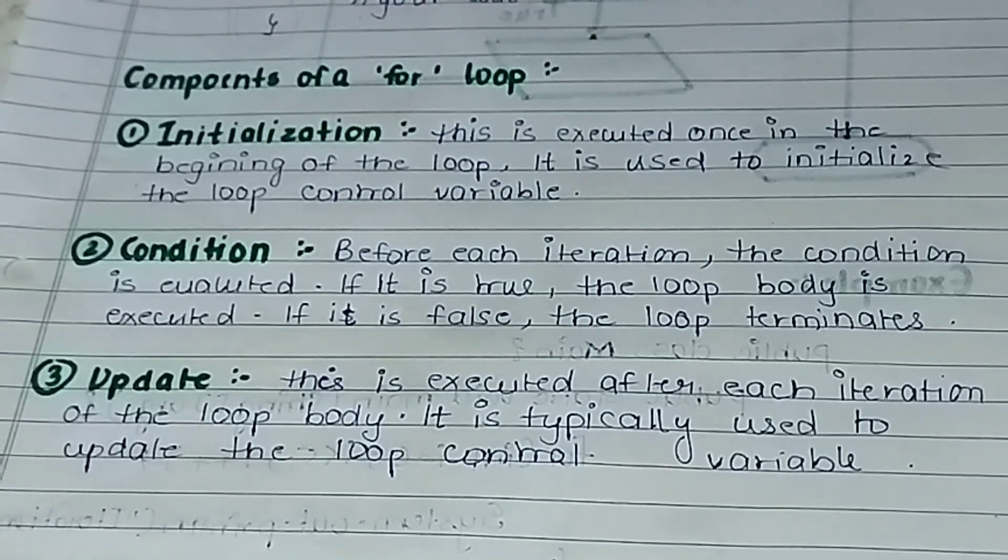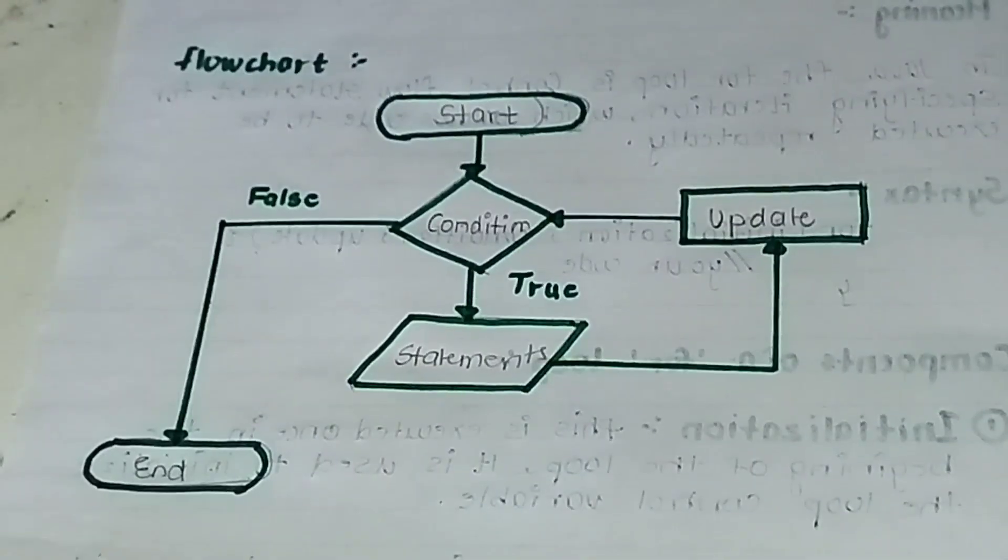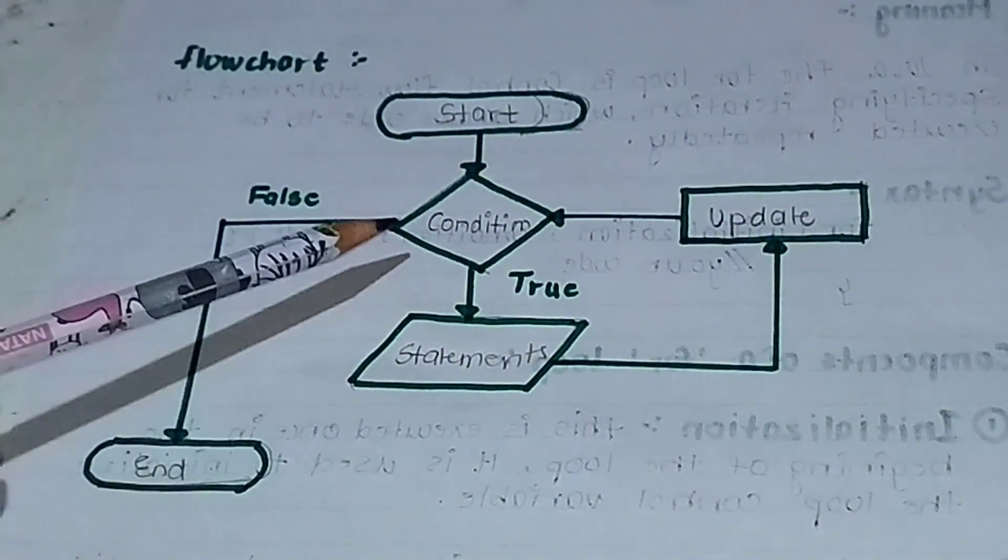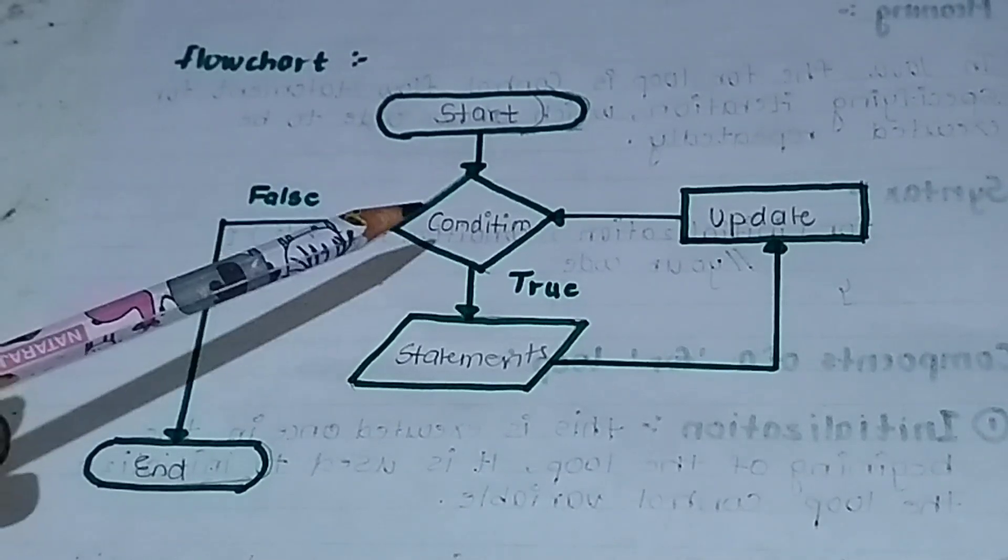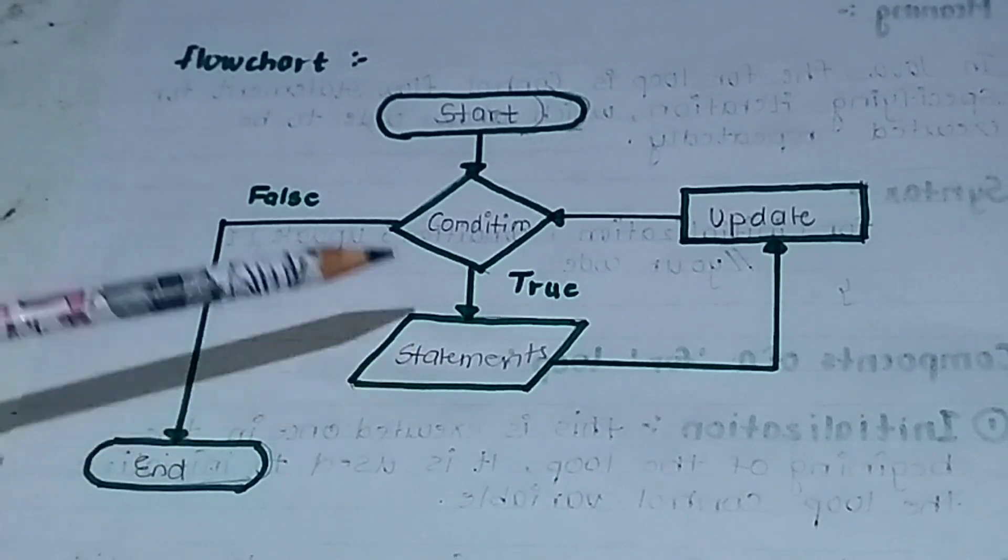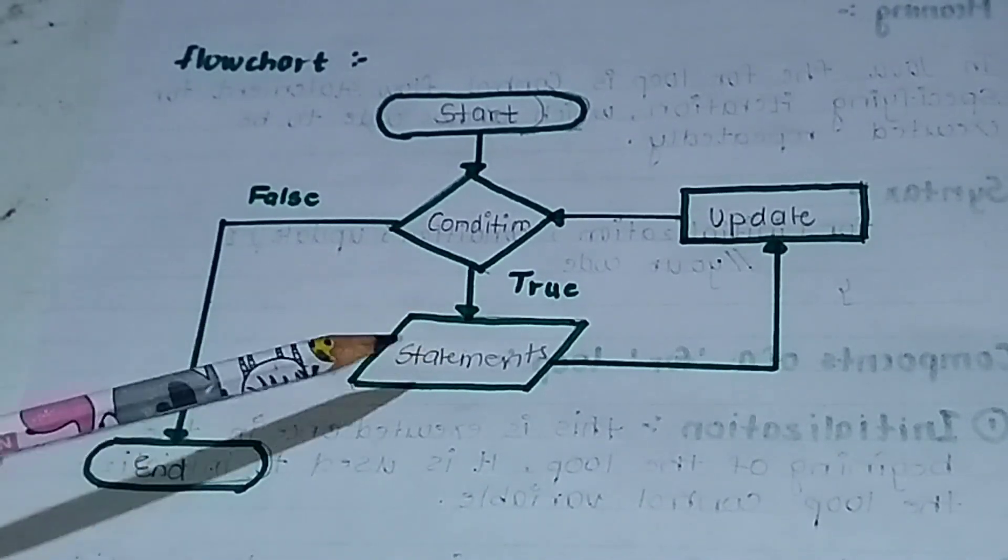Now let's see the flow chart so we understand the flow. So here is our flow chart. First start, and then of course in the diamond shape is the condition. If the condition is true, then the statement will execute.